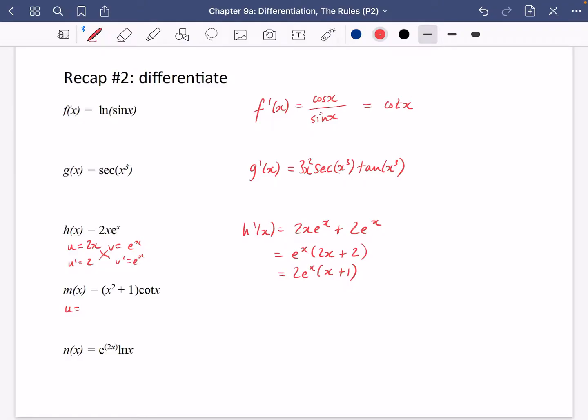I have another product rule here. So I have that u is x squared plus 1, u dash is 2x, v is cot x, and we know that cot x is going to go to minus cosec squared x. Again it's a product rule so you're just going to be putting these all together.